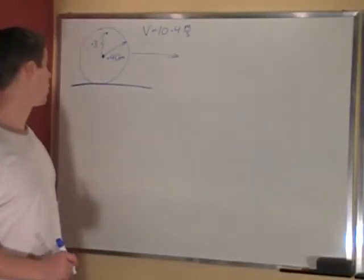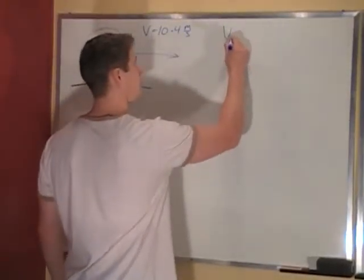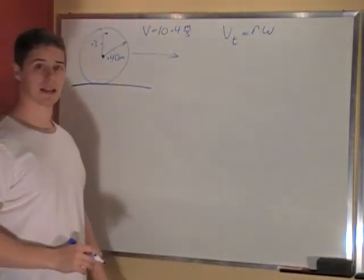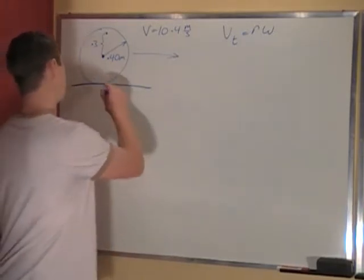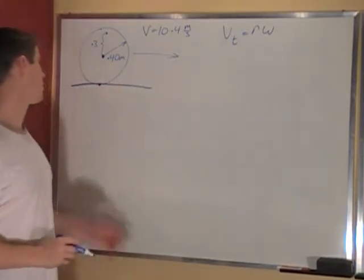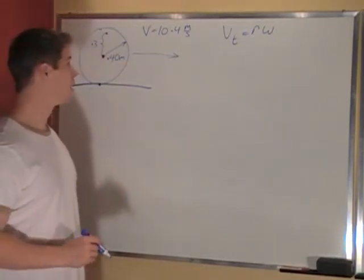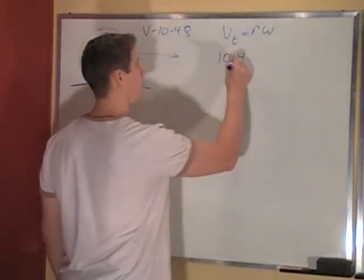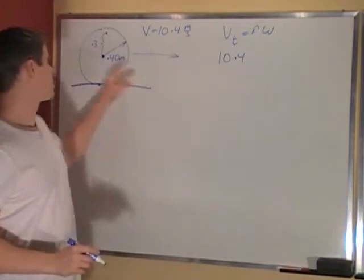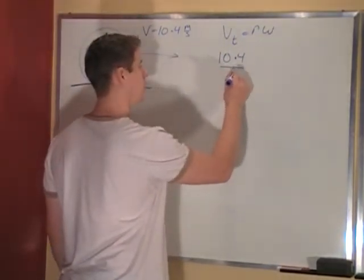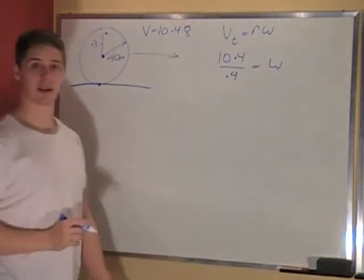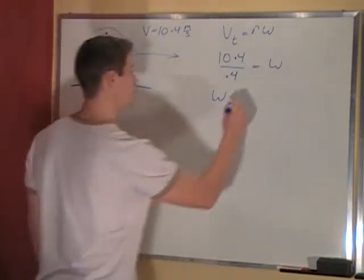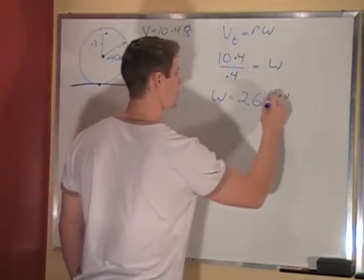For the first part, to find the angular velocity, we know that tangential velocity equals r omega. We're given the actual velocity of the barrel, and that's the tangential velocity. The tangential velocity of a point where it's touching the ground is going to be the exact velocity that the whole barrel is moving at. So that's our tangential velocity of 10.4 — we plug that in, we know the radius is 0.4, so we divide by 0.4, and that equals our angular velocity omega. Dividing these two, we get an omega of 26 radians per second.